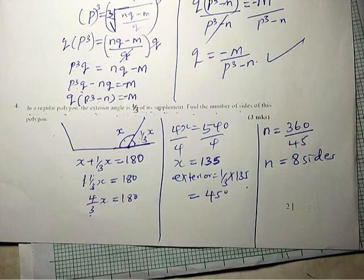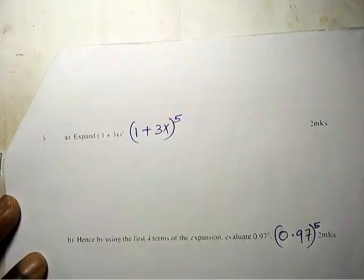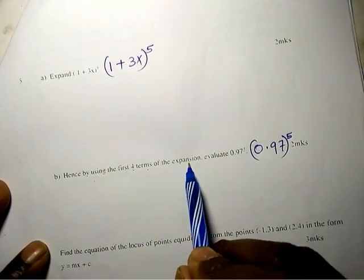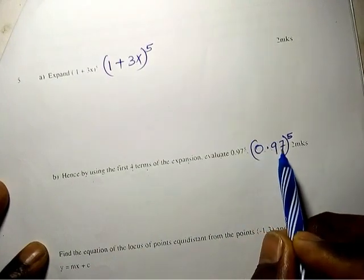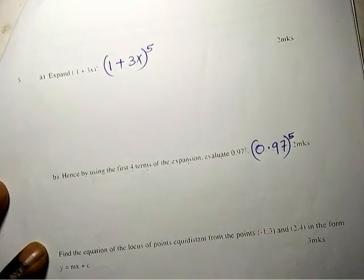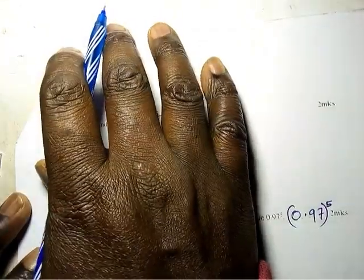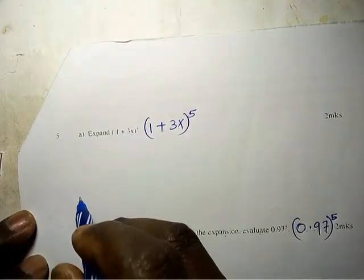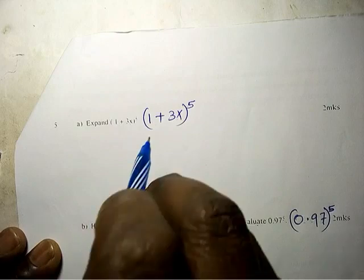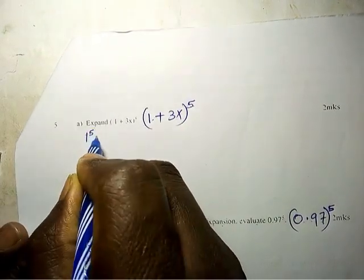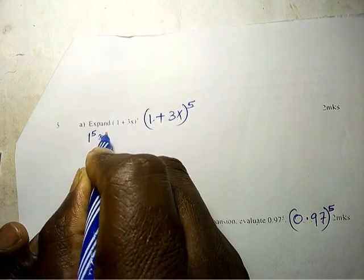Expand (1 + 3x)^5. Hence, by using the first four terms of the expansion, evaluate 0.97^5. So let us expand. This would be 1^5 times (3x)^0 plus...